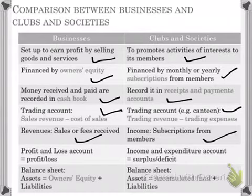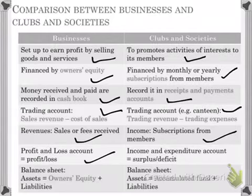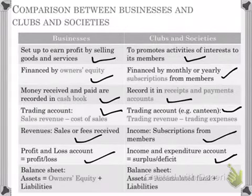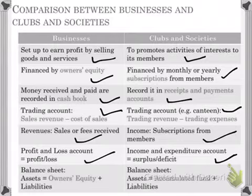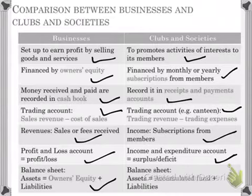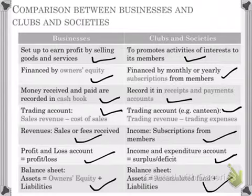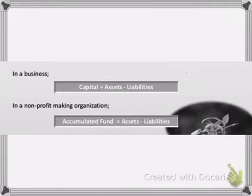In a normal business you make a profit and loss account or income statement to calculate profit or loss, whereas for a club you make an income and expenditure account to calculate whether you are in a surplus or deficit position. For the balance sheet of a club, the format is actually the same — the only difference is that the word 'owner's equity' is replaced by the word 'accumulated fund', which I will explain in the next slide.